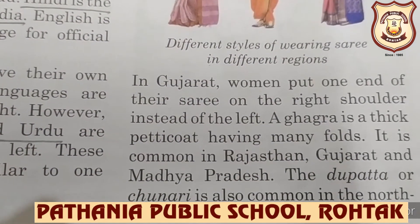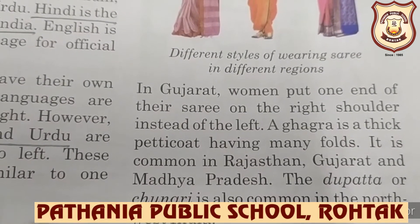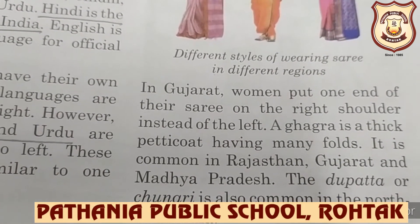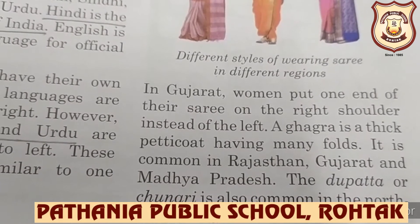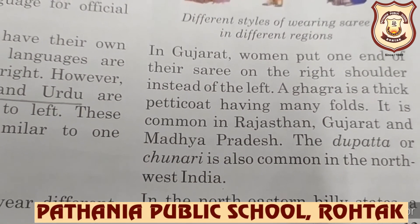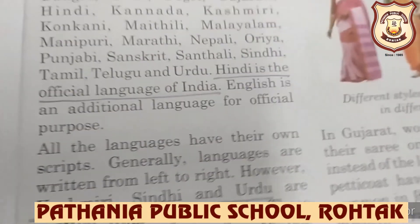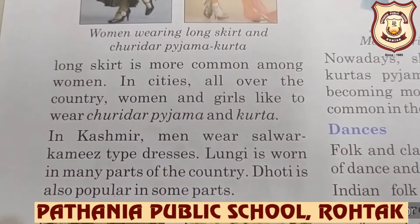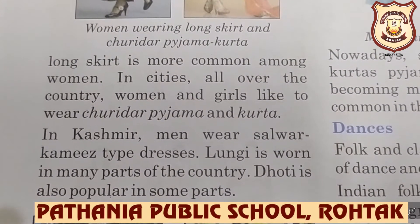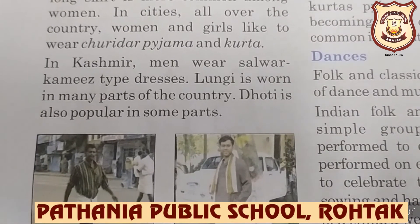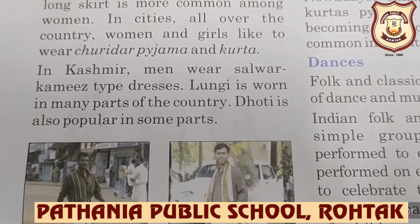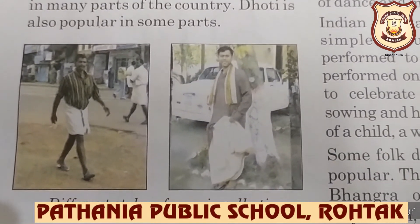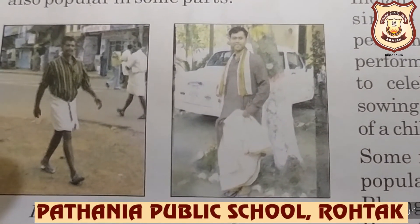In Gujarat, women put one end of their saree on the right shoulder instead of the left. A ghagra is a thick petticoat with many folds, common in Rajasthan, Gujarat, and Madhya Pradesh. The dupatta or chundravi is also common in northwest India. In northeastern hilly states, a long skirt is more common. In cities, women and girls like to wear churidar pajama and kurta. In Kashmir, men wear salwar kameez. Lungi is worn in many parts of the country, and dhoti is also popular in some parts.